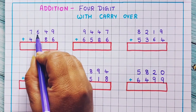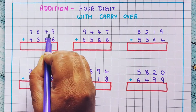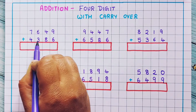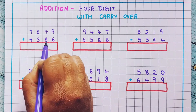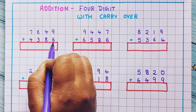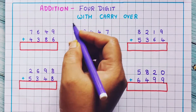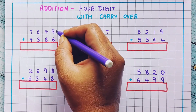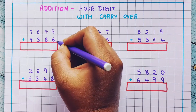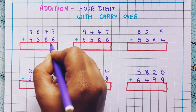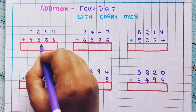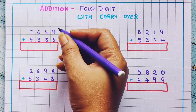Now 7649 plus 4386. How are we going to do this? We are going to start with the addition from the 1's place and then move towards the left. So let's do it.